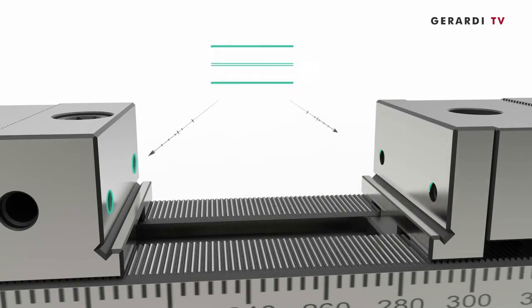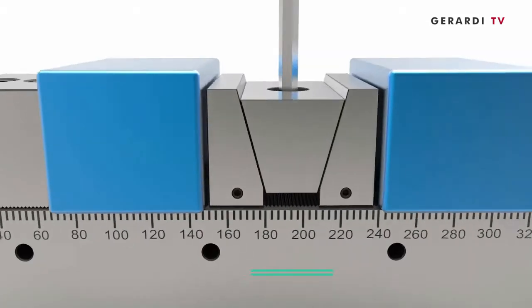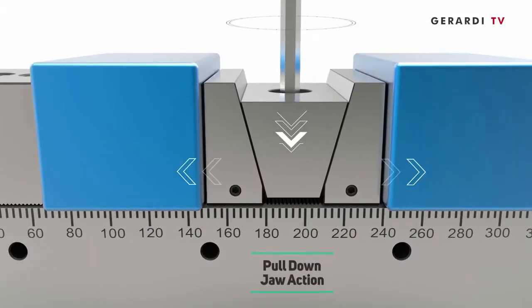Feature 6: Front threaded holes and guided pull-down jaw action thanks to the ground combed teeth jaws.